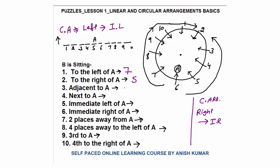Adjacent to A means next seat — seat number seven or seat number five, same as linear arrangement. Next to A is again the same — either seat seven or seat five. Immediate left of A is seat number seven. Immediate right of A is seat number five. Two places away from A: seat seven is one place away, seat eight is two places away. On the other side, seat five is one place away, seat four is two places away. So two places away from A is seat eight or four — similar to linear arrangement, no difference.